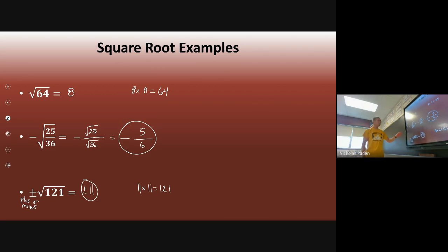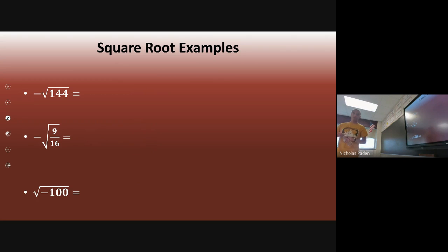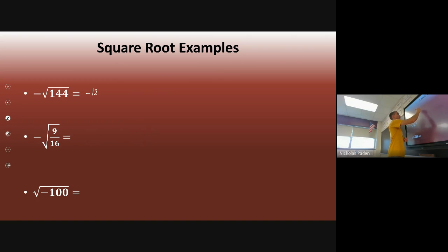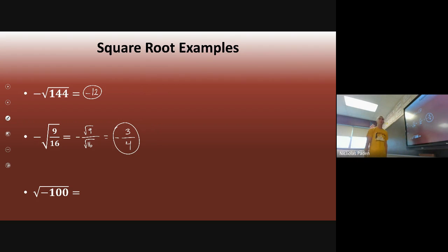Pause the video and figure out these three answers. Coming back: the negative square root of 144 — the square root of 144 is 12, because 12 times 12 is 144, so the answer is negative 12. For the negative square root of 9 over 16, make it the square root of 9 over the square root of 16. The square root of 9 is 3, the square root of 16 is 4, so the answer is negative 3 fourths.